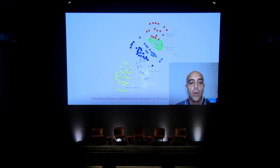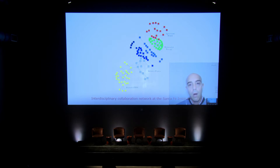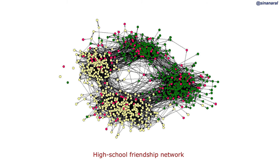This slide shows the interdisciplinary collaboration network at the Santa Fe Institute. The nodes are people, each colored by their theoretical area — RNA structure, statistical physics, mathematical ecology, agent-based models — and you immediately notice they group together, talking more to one another than to people outside their group. In the next slide, a high school friendship network is colored by year — freshman, sophomore, junior, senior — and you again start to notice separation by type of person.